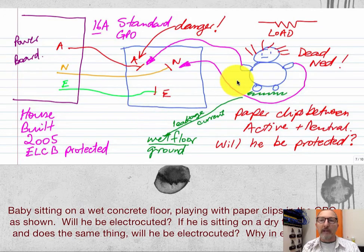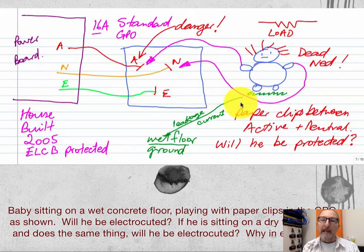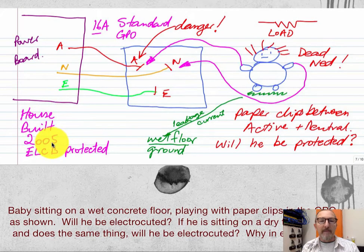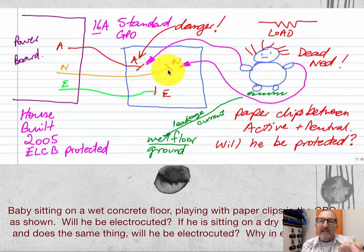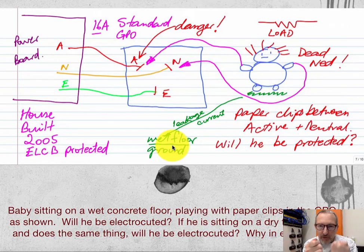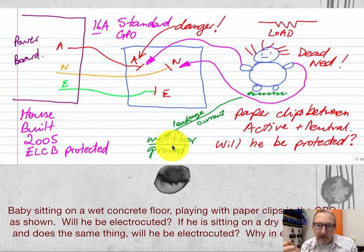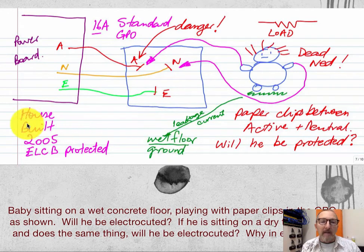Here we have a little kid sitting on a floor. If he's sitting on a wet floor and he's decided to play with paper clips — and it's a house built in 2005, so it's going to be ELCB or RCD protected — the kid has paper clips in each hand placed directly across the active and neutral terminals. Will he be protected? Will the circuit breaker trip? Will there be leakage current, or will he just be seen as a load across the active-neutral terminals? Well, the answer is that he will be saved.